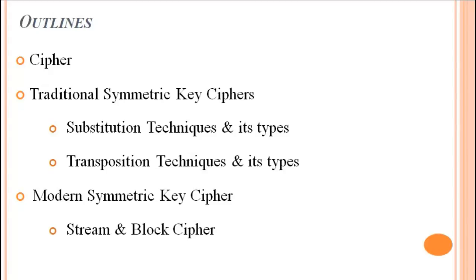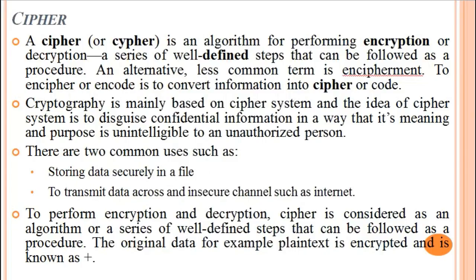What is cipher? Traditional symmetric key cipher — these two types: substitution cipher and its types, and the other one is transposition cipher and its types. Next one is modern symmetric key ciphers, classified in two categories: stream cipher and block cipher.